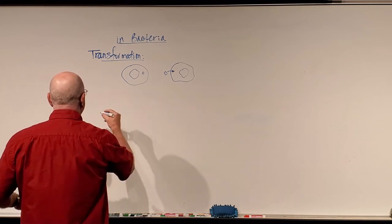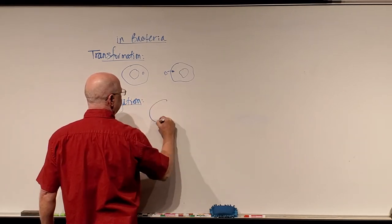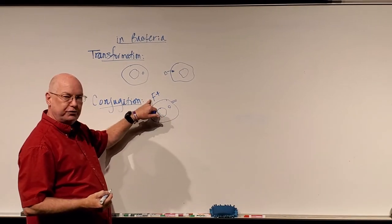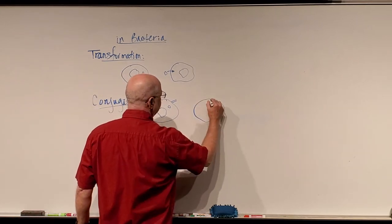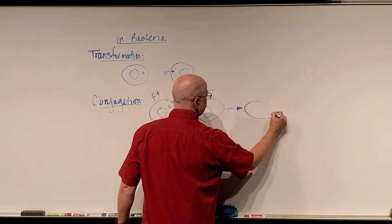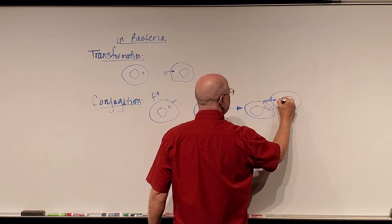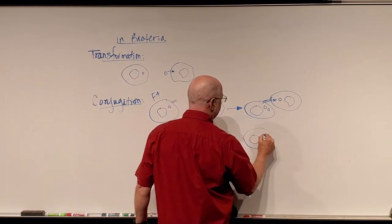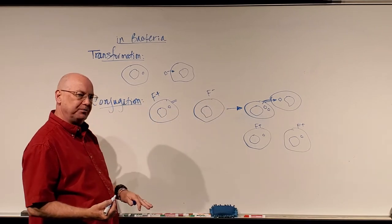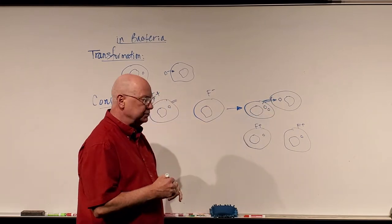In conjugation — a topic we touched on briefly — one bacterium may have a plasmid, for example an F-positive bacterium has the fertility plasmid. Another bacterium is F-negative: it doesn't have the plasmid or the pili. When these two bacteria come together, the F-positive bacterium can copy its plasmid and insert a copy into the new cell. As they separate, now I have two F-positive bacteria. This uses the fertility pili or sex pilus to transfer plasmids from one cell to another.